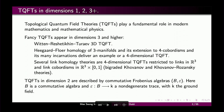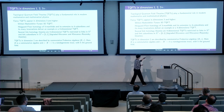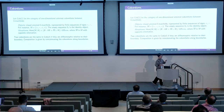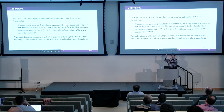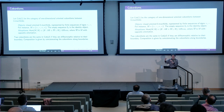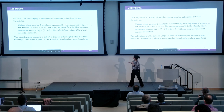For TQFTs in dimension two, they're described by commutative Frobenius algebras, where B is a commutative algebra and epsilon is a non-degenerate trace, where K is a ground field. Let cob one denote the category of one-dimensional cobordisms. The objects are zero-dimensional manifolds, and a manifold has an orientation — positive or negative.